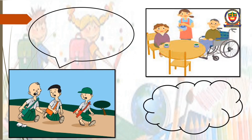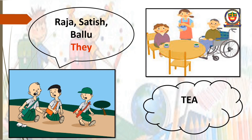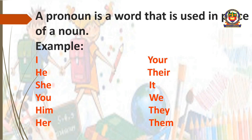Now, here in this picture we can see three boys. They are Raja, Satish and Ballu. If we want to use all three of them in a sentence, instead of using their names, we can also say they. Similarly, in this picture, mother is drinking tea and her friend is also drinking tea. So instead of saying tea two times, we can also say it. So a pronoun is a word that is used in place of a noun. I, he, she, you, him, her, your, their, it, we, they, them — these are certain examples of pronouns.